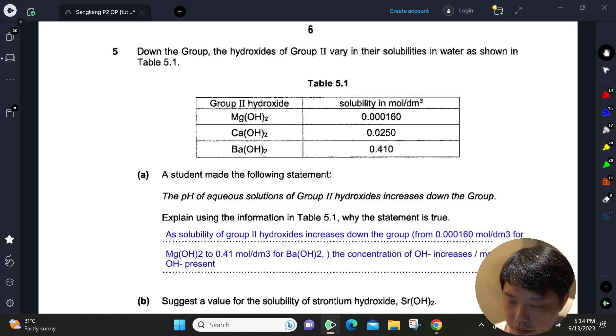Let's look at question 5. The hydroxides of Group 2 vary in their solubilities in water as shown in Table 5.1. A student made the following statement: the pH of equal solutions of Group 2 hydroxides increases down the group. Explain using the information in Table 5.1 why this statement is true.